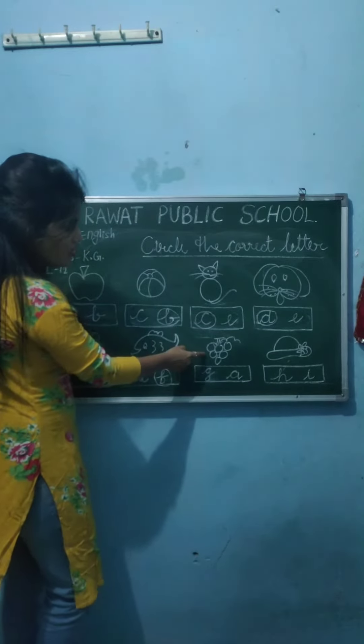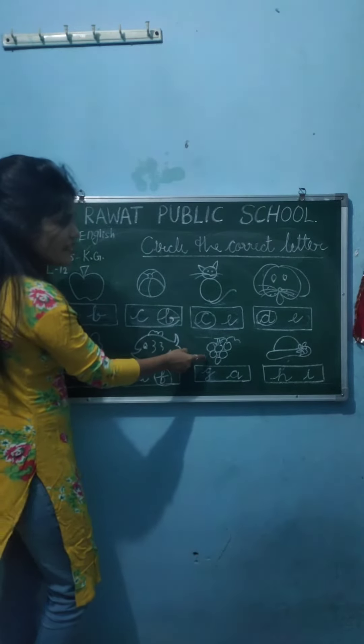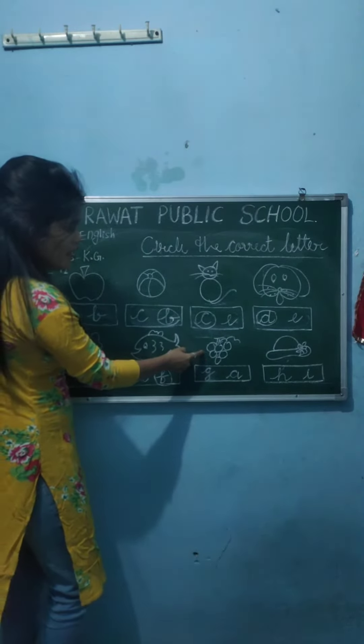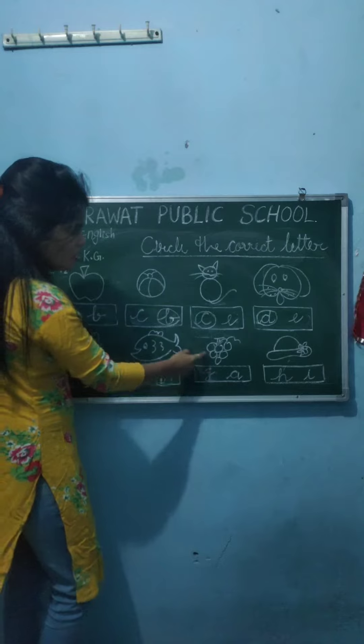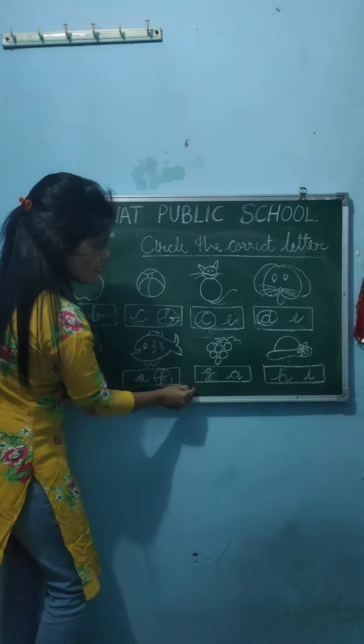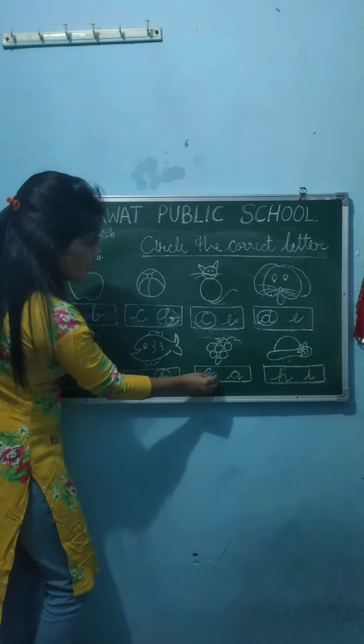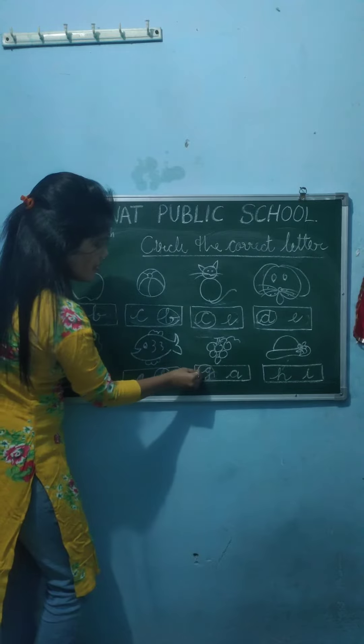Now next. What is this? This is grapes. G for grapes. Which one is G? This one. Make a circle.